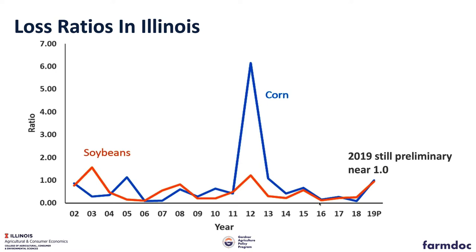In recent years, both corn and soybeans have had very low loss ratios — hitting very low numbers, particularly in 2018. Going back to 2018, 2017, 2016, all those numbers for both corn and soybeans were well below 0.5. Right now, as of last week, the loss ratio for corn and soybeans in Illinois is right at 1.0, still a preliminary number as not all payments have been made.